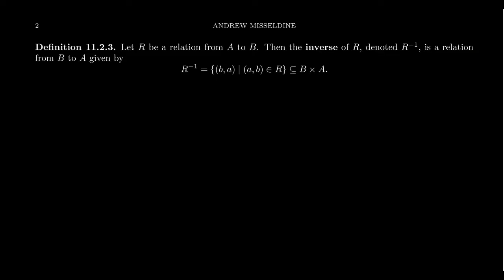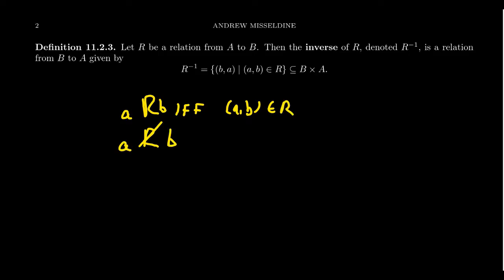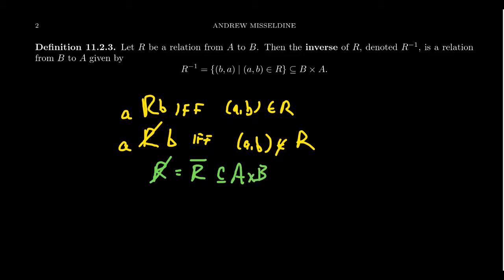Earlier I introduced the notion of a negation of a relation. Given any relation R, where A is related to B if and only if (A, B) is in R, the negation is simply the complement of R viewed as a subset of A cross B. So A is not related to B means (A, B) is not in R, which defines a new relation — the negation of R.